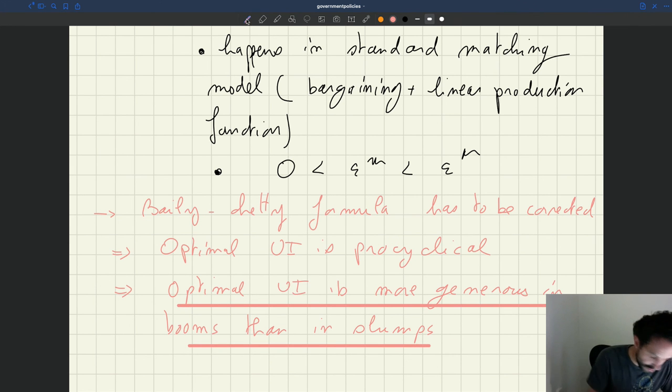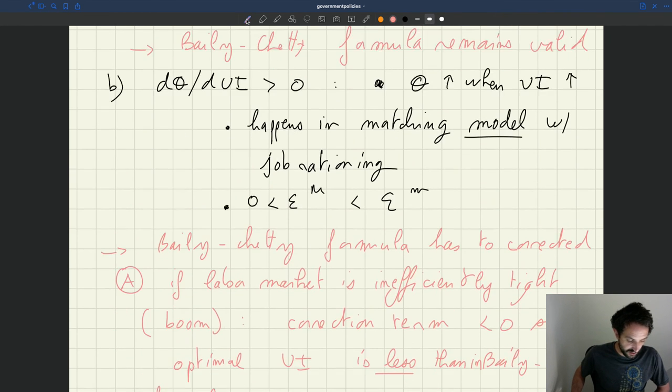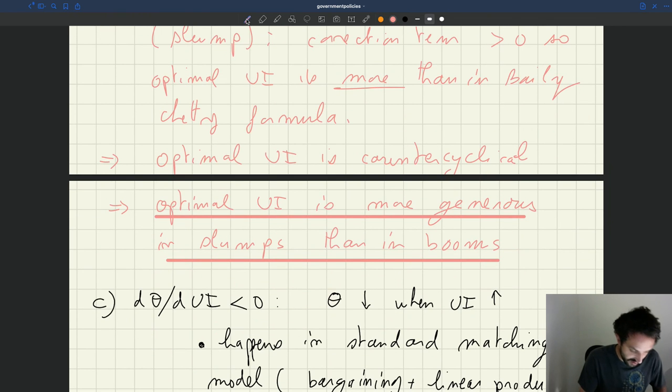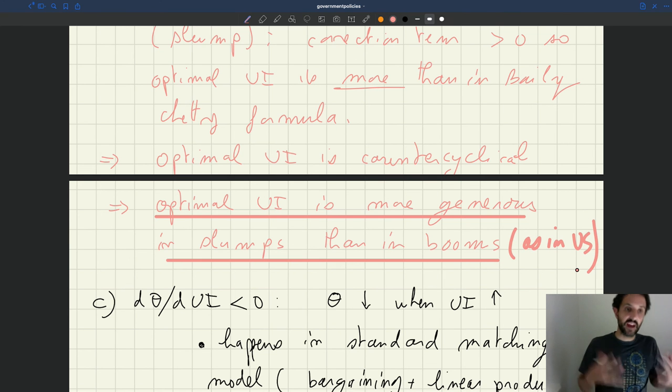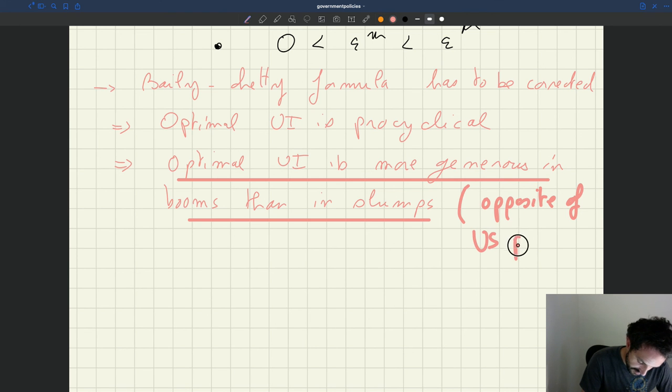And something I didn't note earlier, but I should have. So these results that we've got in the model with job rationing, where the effect of UI on tightness is positive, that's exactly as in the U.S. So the policy that we have in the U.S. of extending the duration of UI in bad times is exactly consistent with that model. In the standard model, you get the opposite result, that the UI is more generous in booms than in slumps, which maybe seems counter-intuitive, but at least, at the minimum, that's opposite of the U.S. policy. So if that was actually the case, we need to flip around completely the way UI operates in the U.S.